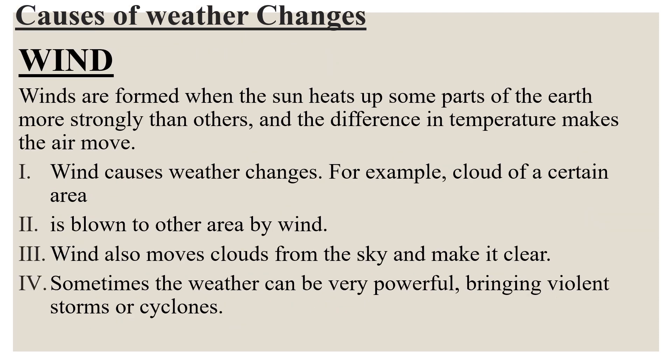Winds are formed when the sun heats up some parts of the Earth more strongly than others, and the difference in temperature makes the air move. Wind causes weather changes. For example, a cloud of a certain area is blown to another area by wind. Wind also moves clouds from the sky and makes it clear. Sometimes the weather can be very powerful, bringing violent storms or cyclones.